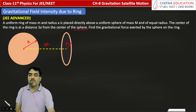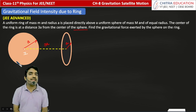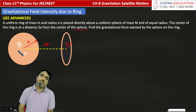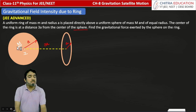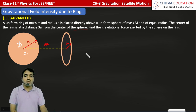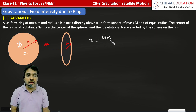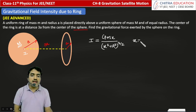We will find the gravitational field intensity of the ring at the center of the sphere, because gravitational force follows Newton's third law — every action has an equal and opposite reaction. So first of all we find the intensity I. The intensity at the center of the sphere is equal to G times small m times X, divided by (X² + R²) to the power 3/2. Here X value is 3A.